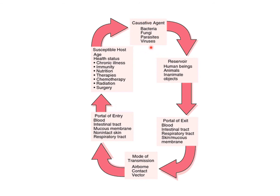This image depicts the chain of events which may lead to nosocomial infections in hospital environments. The presence of microorganisms in the hospital environment may find a suitable reservoir amongst human beings, whether patients or healthcare staff or attendants of the patients, animals, or inanimate objects. The microorganisms may exit an infected individual either through blood, intestinal tract, respiratory tract, or skin or mucous membranes, and may cause infection either through the airborne route, direct contact, or through a vector, and may gain entry into another individual through any of these routes. Nosocomial infections are much more likely in patients who are susceptible to infection.